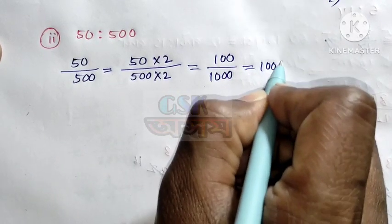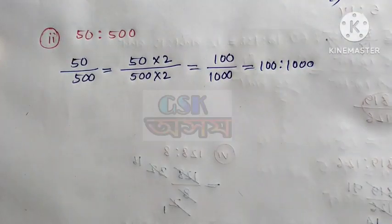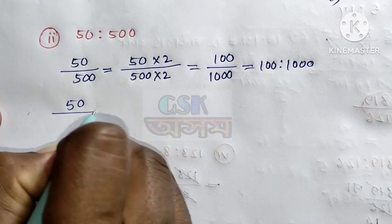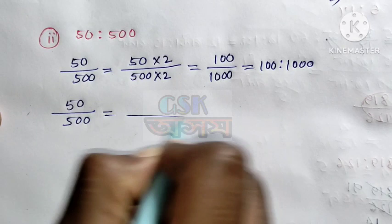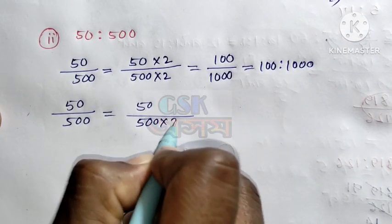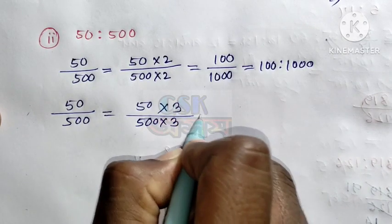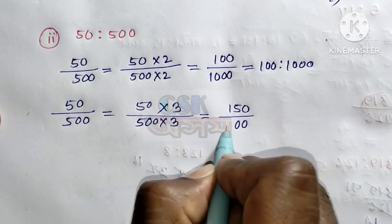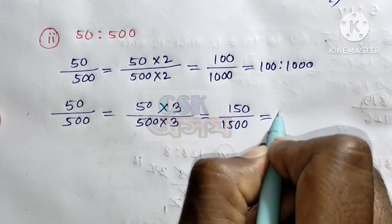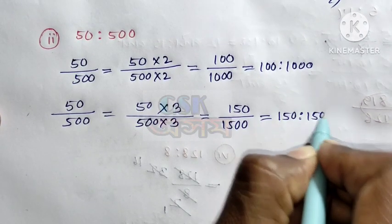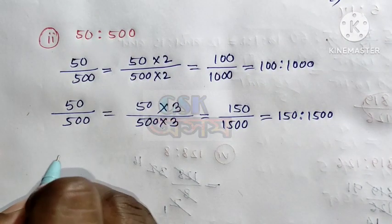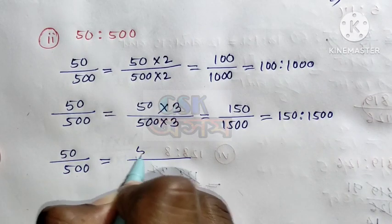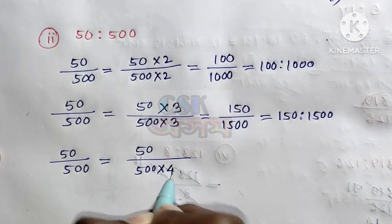100 is to 1000. Next, if we add 3, we add 3. 50 by 500. 50 by 500. I will add 3 to 3. 1, 3.5, 5, 3.5, 5. 150 by 500. 50 by 500 is equal. 50 by 500.